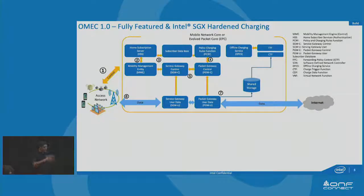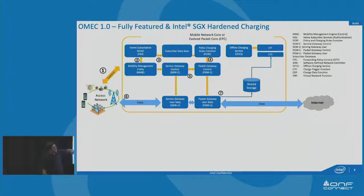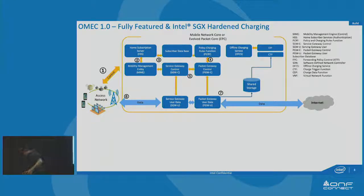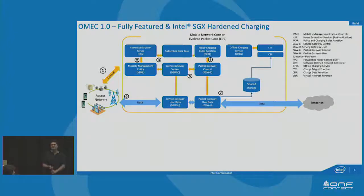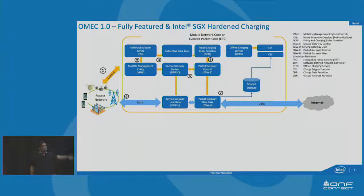Let's look at how the VNFs released as part of OMEC are connected. They're connected in a very popular way — everybody knows how to connect all the components. Let's look at one aspect first: the billing and charging system. The packet gateway generates a lot of billing and charging data because it's handling all the user packets. It knows which particular user transacted on which website, how much data was uploaded, how much was downloaded. All those billing and charging records are generated at the packet gateway. Today, telcos just store it on a shared storage, and at some point the billing system picks it up, processes it, and sends you the bill.